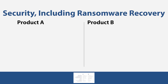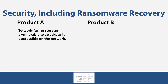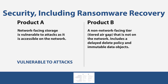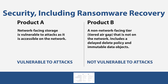Security, including ransomware recovery: Product A uses network-facing storage that is vulnerable to attacks as it is accessible on the network — your backup data is vulnerable to attacks. Product B uses a non-network-facing tier, a tiered air gap that is not on the network, with a delayed delete policy and immutable data objects — your data is not vulnerable to attacks.